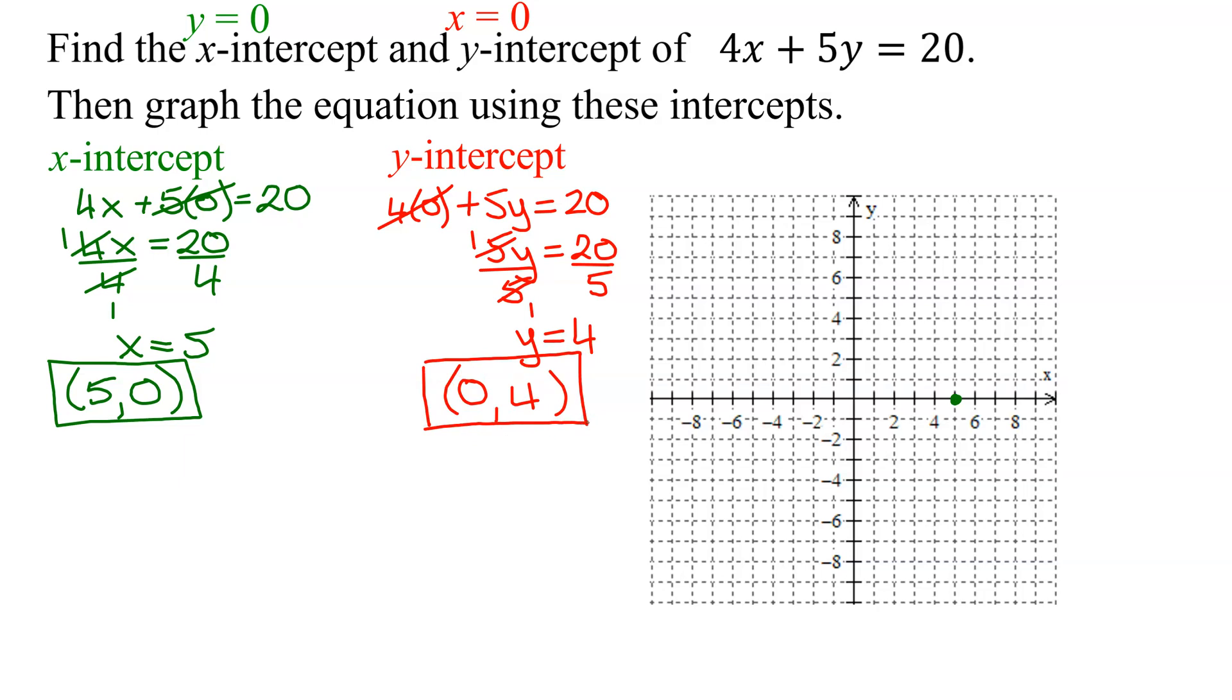So let's plot that point. Start at the origin, x is 0, go nowhere in the x direction. And y is 4, go up 4. So there is my y-intercept.